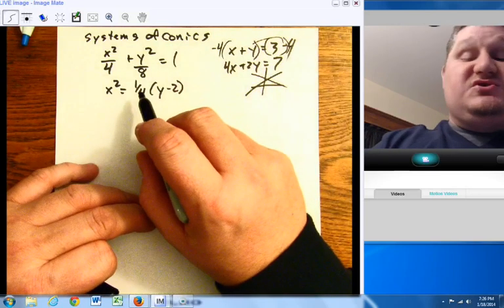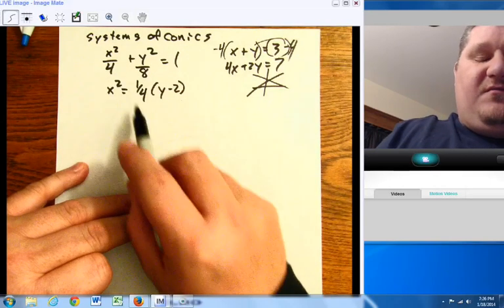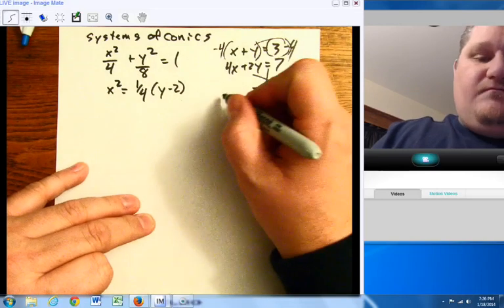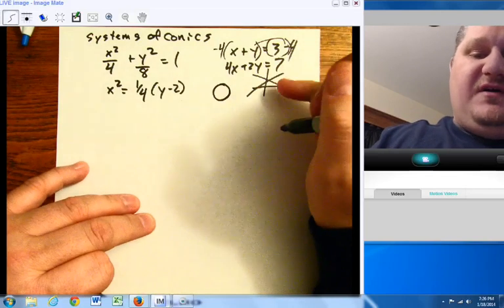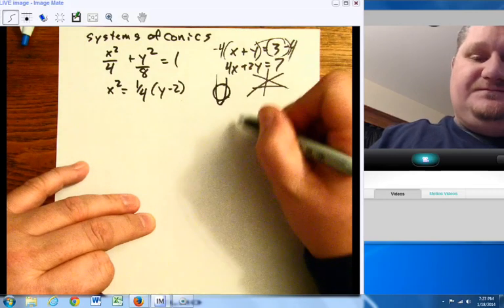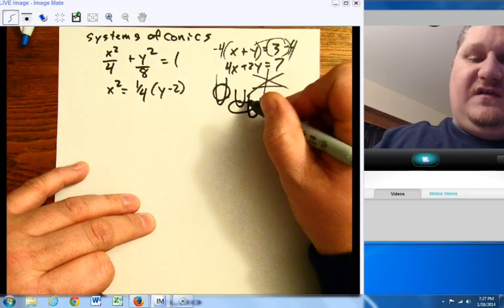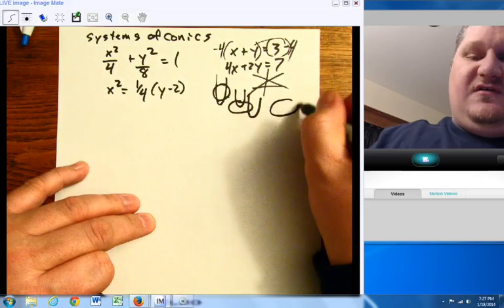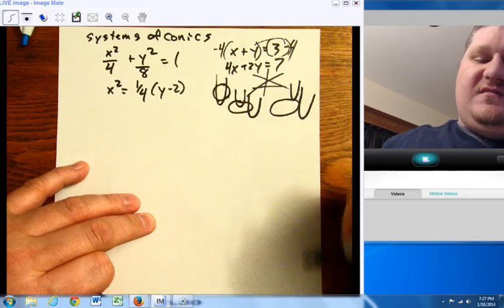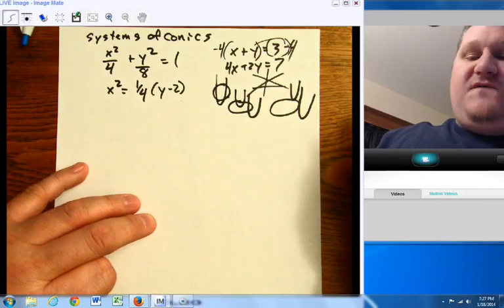So those methods for solving systems with two unknowns still work when we come over to conics. The difference is we have things squared. In our case, we have an ellipse with square, square, plus in the middle, two different bases. We also have a parabola. They could be connected in a bunch more different ways than two lines. I could have an ellipse and a parabola intersect in four places, two places, two places like this, or just intersect in one place, coming down here, or if it happens to graze the edge. So we have a lot more options for where they might cross.